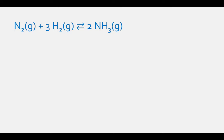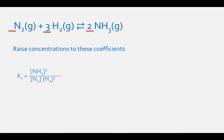Let's consider the reaction N₂ gas plus 3H₂ gas in equilibrium with 2NH₃ gas. In this case, we do have coefficients before the reactants and products, and we raise the concentrations or the partial pressures to these coefficients. The concentration equilibrium constant Kc equals the concentration of NH₃ squared divided by the concentration of N₂ times the concentration of H₂ cubed. The pressure equilibrium constant Kp equals the partial pressure of NH₃ squared divided by the partial pressure of N₂ times the partial pressure of H₂ cubed.